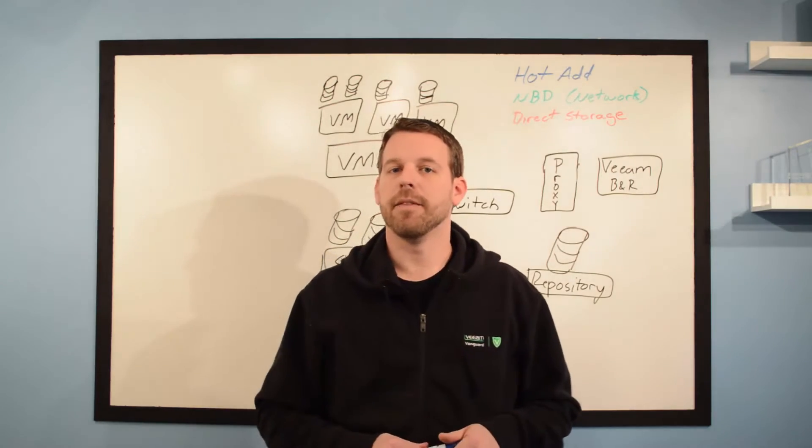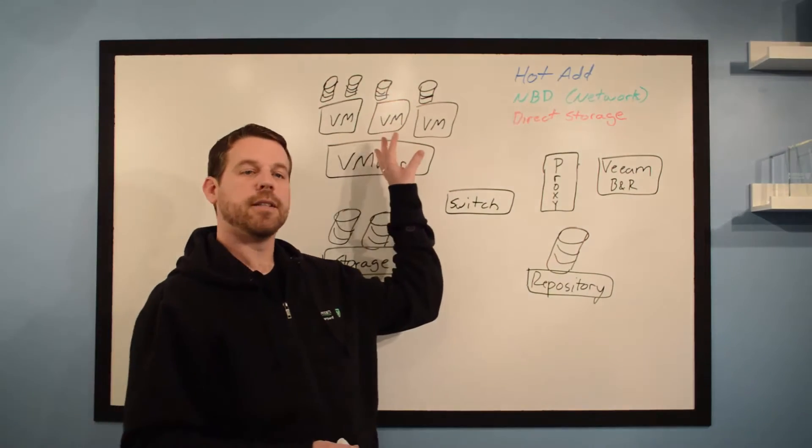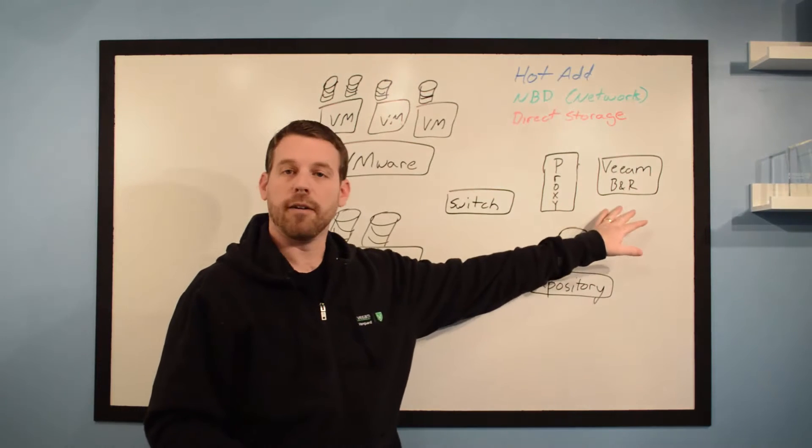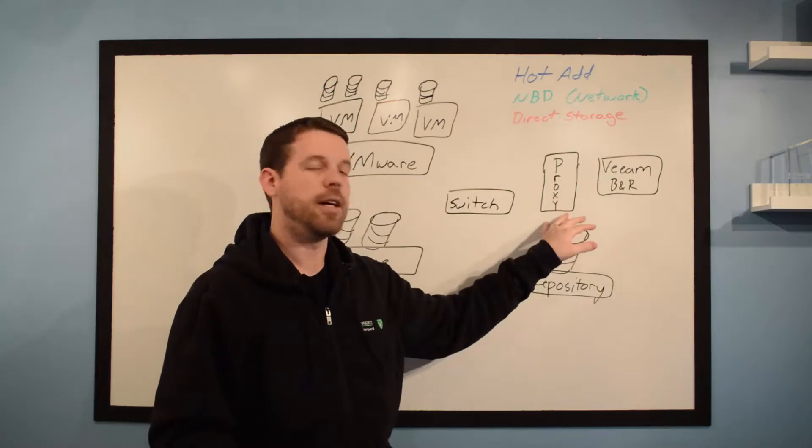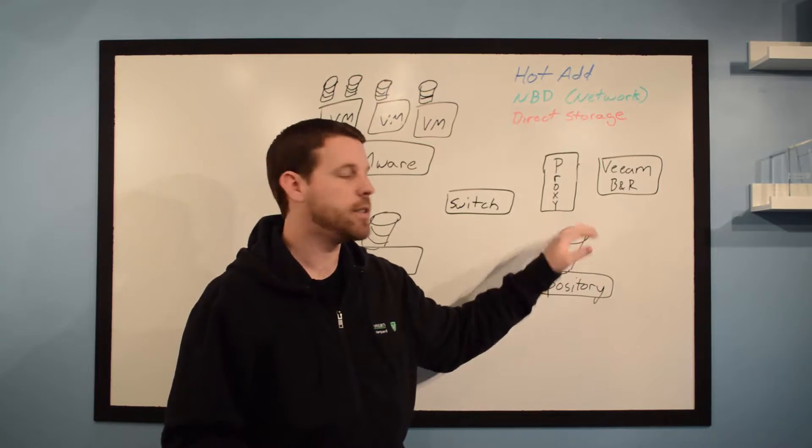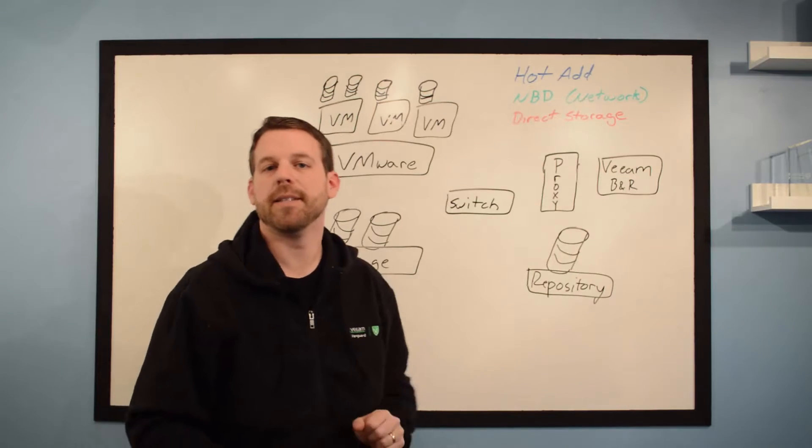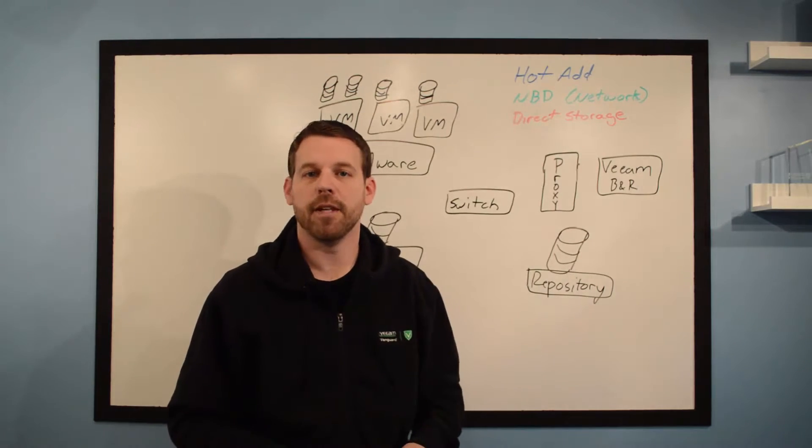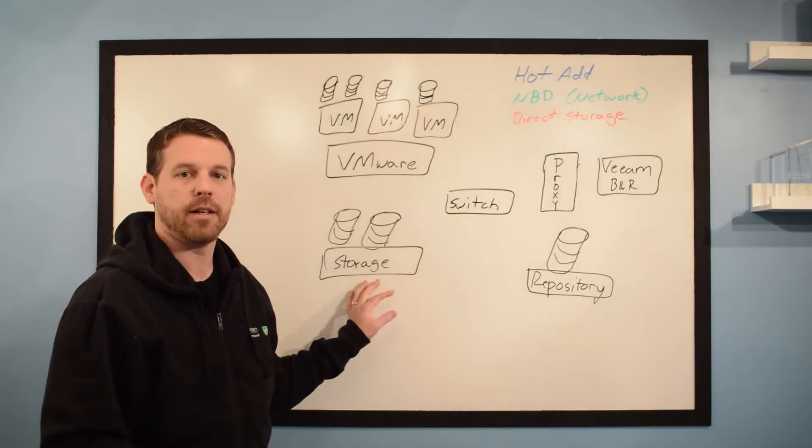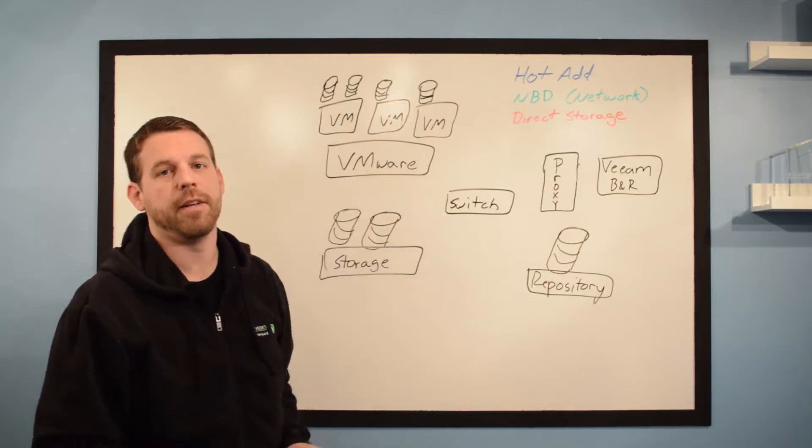Let's get started with our environment here. Now you can see we've got our VMware server here with our virtual machines up top. We've got our network switch, our Veeam backup and replication server, a physical proxy server right here that we're going to use, a Windows 2016 server, and our repository. We've got a couple different repository types, we'll talk about that in a later video. And we've got our VMware storage down here with our VMFS data source, which will be attached to our VMware host.